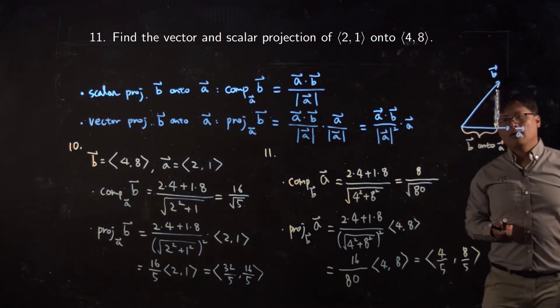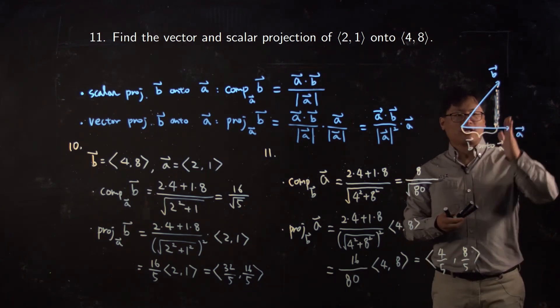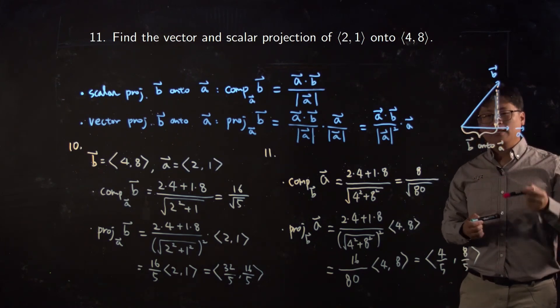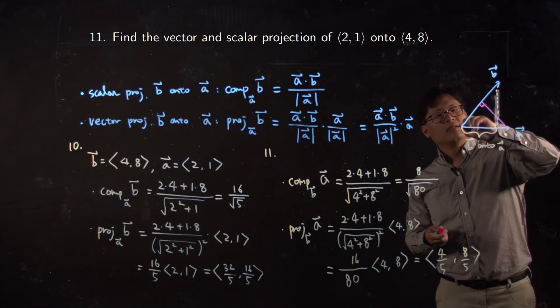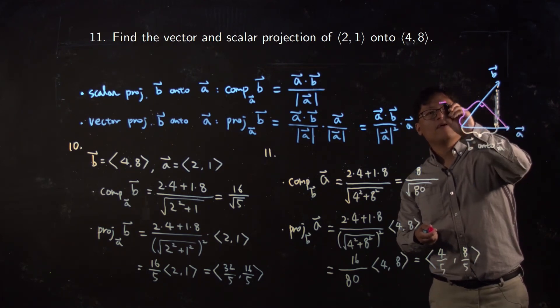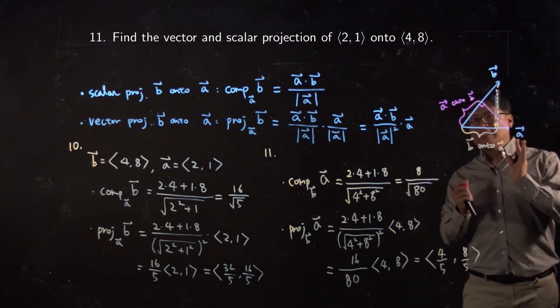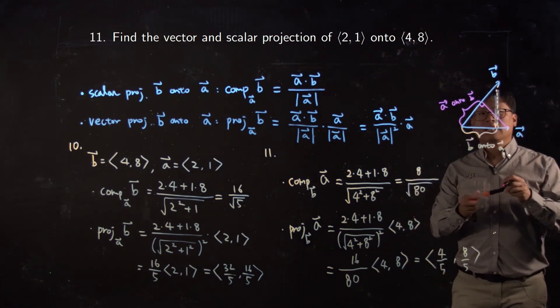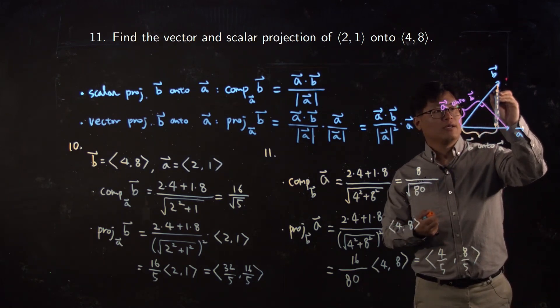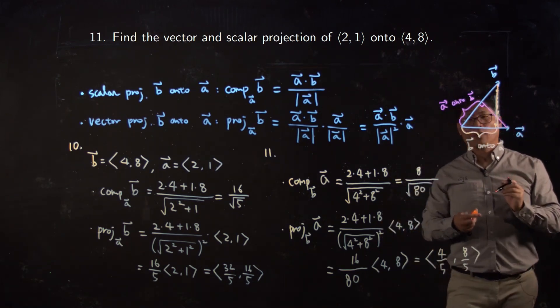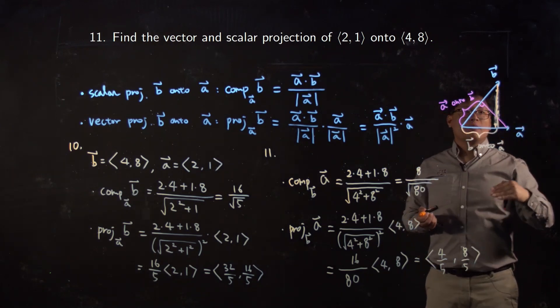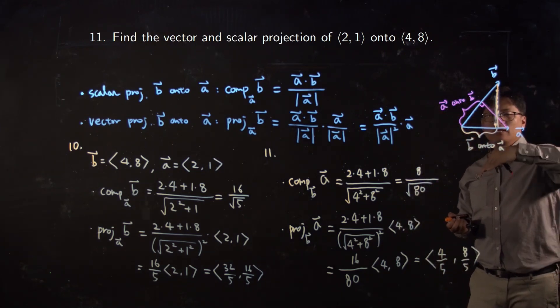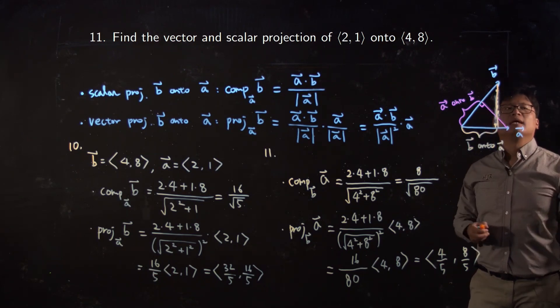This guy, that is vector a onto b. Okay, so basically you can understand the projection as the shadow. Does it make sense? So keep that in mind, the direction is important. Projecting a onto b and b onto a are different.